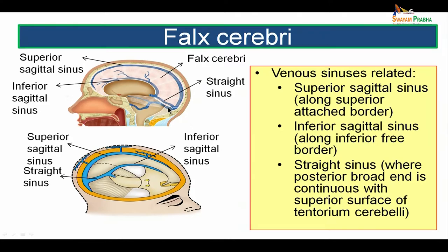There are venous sinuses related to the falx cerebri. Along its upper attached border is the superior sagittal sinus. Along its inferior free border is the inferior sagittal sinus. Along the posterior end attached to the superior surface of the tentorium cerebelli is the straight sinus. Thus there are three dural venous sinuses related to the falx cerebri: the superior sagittal sinus, the inferior sagittal sinus, and the straight sinus.